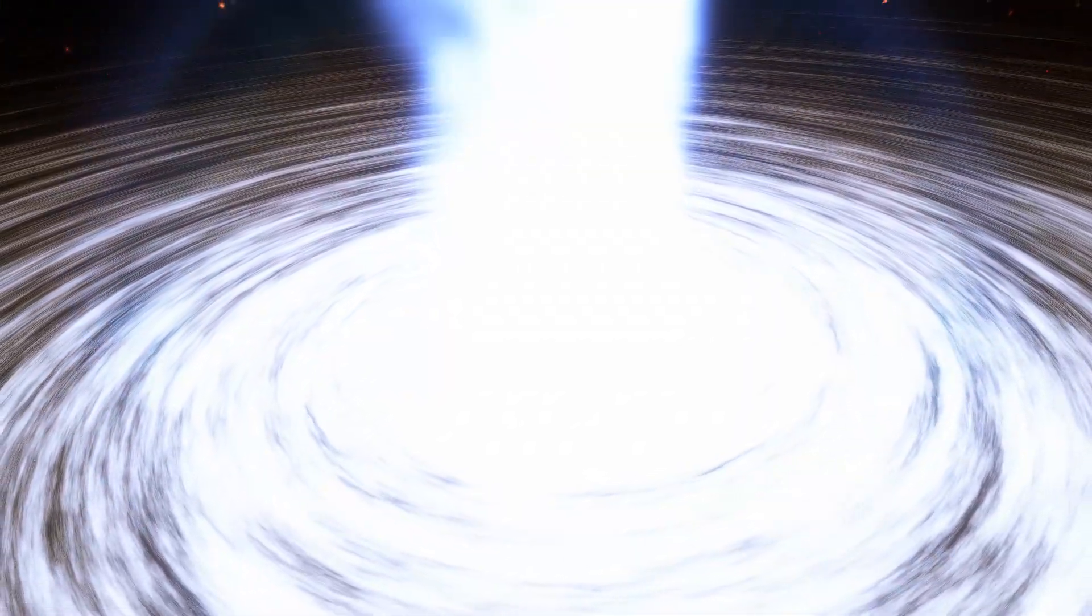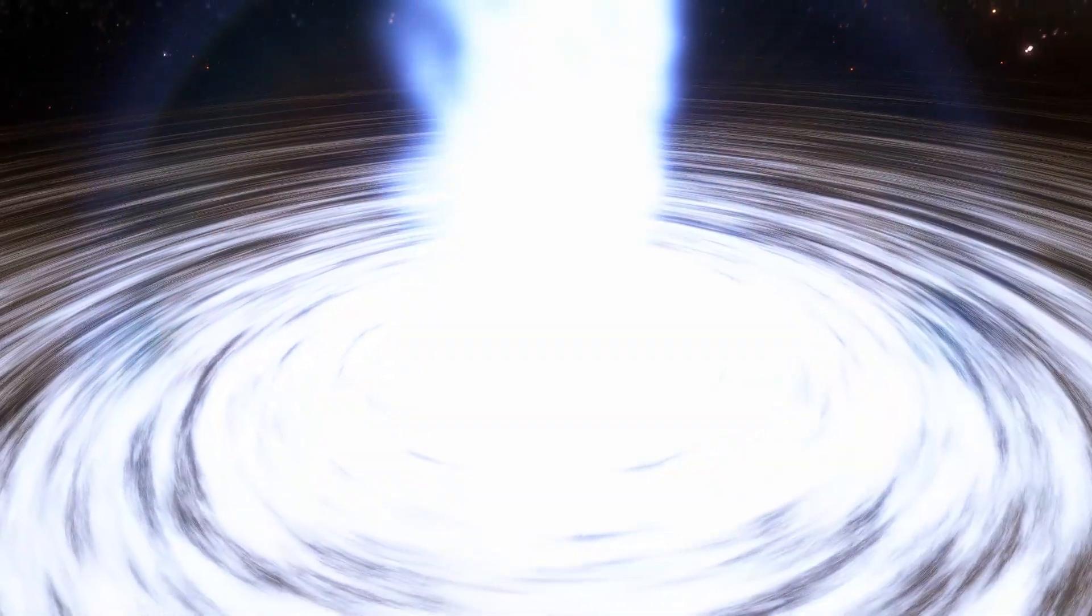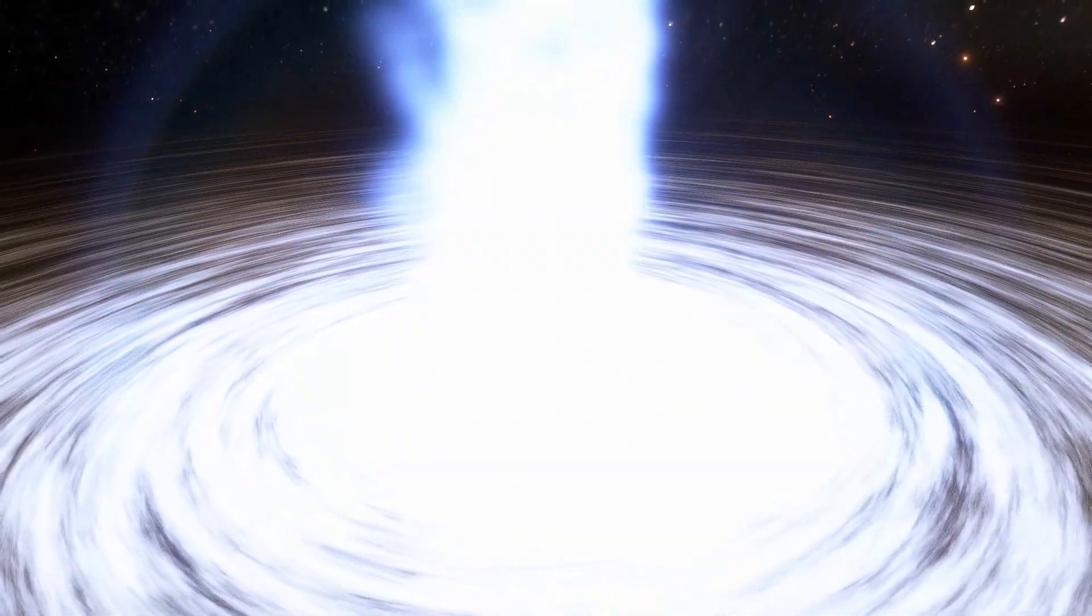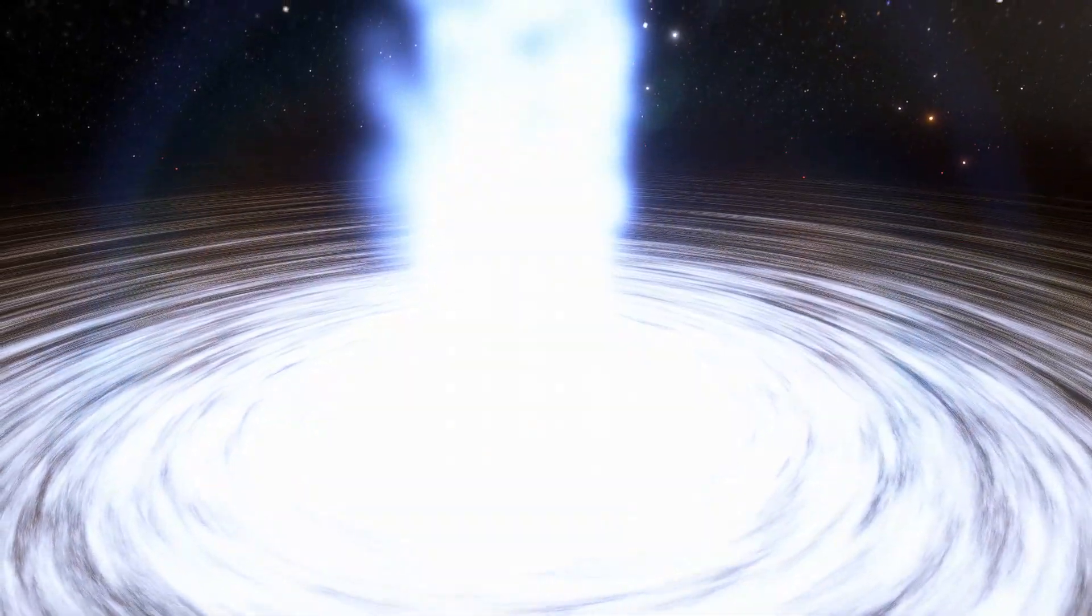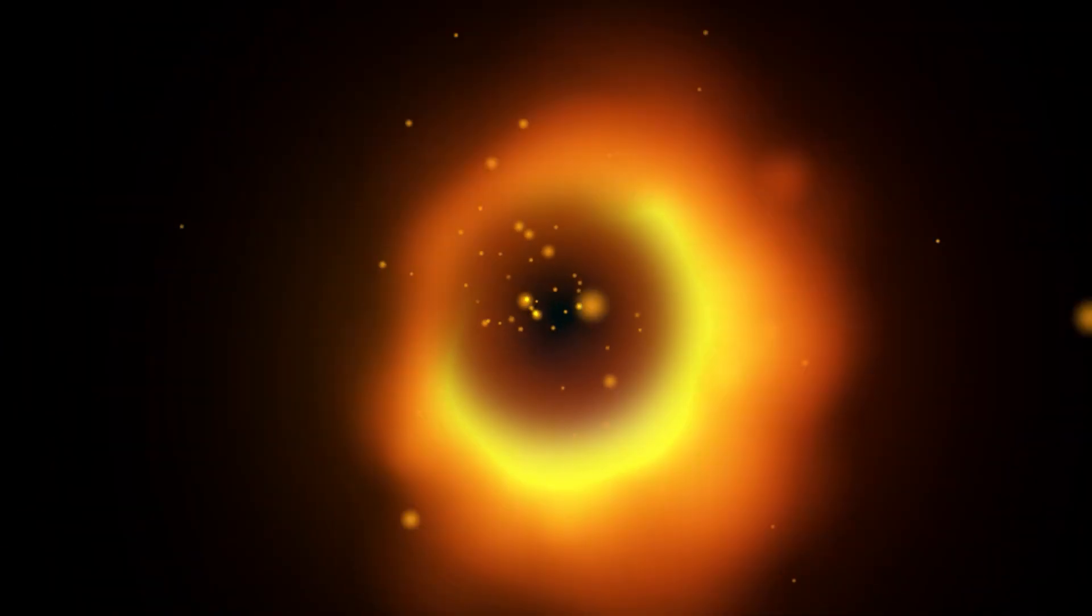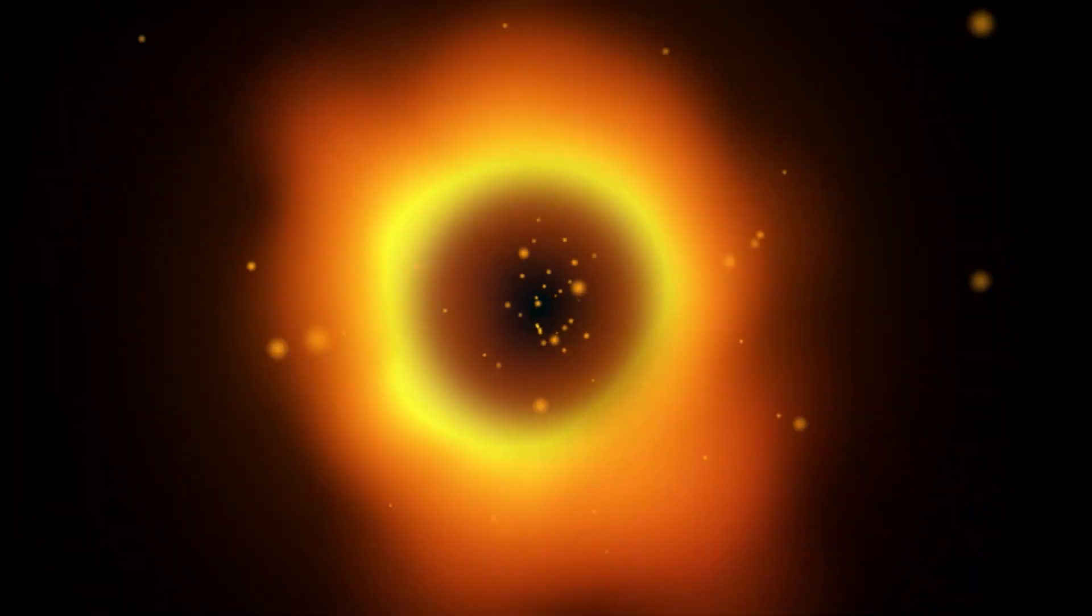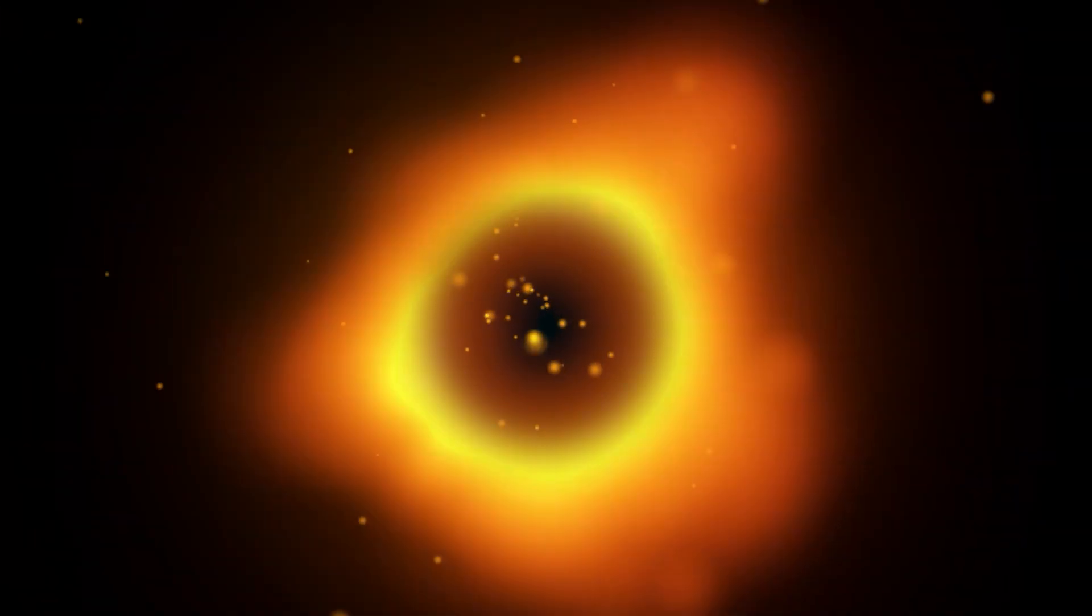Sagittarius A is relatively small, and matter trickles into it very slowly. If it were the size of a human, it would consume the mass of a single grain of rice every million years. But by taking many images, it would be possible to watch the flow of matter around and into the black hole in real time. This would allow astrophysicists to study how black holes consume matter and grow.